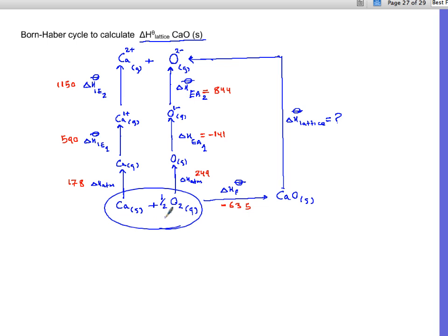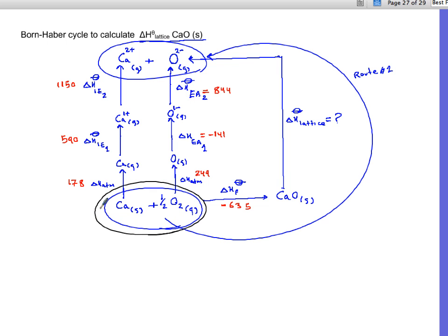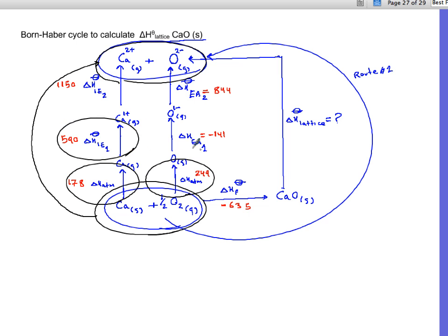Going from these elements to the ions is one pathway, so you can call it route one, is equal to the second pathway which is sum of six terms in order to go from here to fragments of ions, which you need one, two, three, four, five, six enthalpies are equal to other side which are two enthalpies.